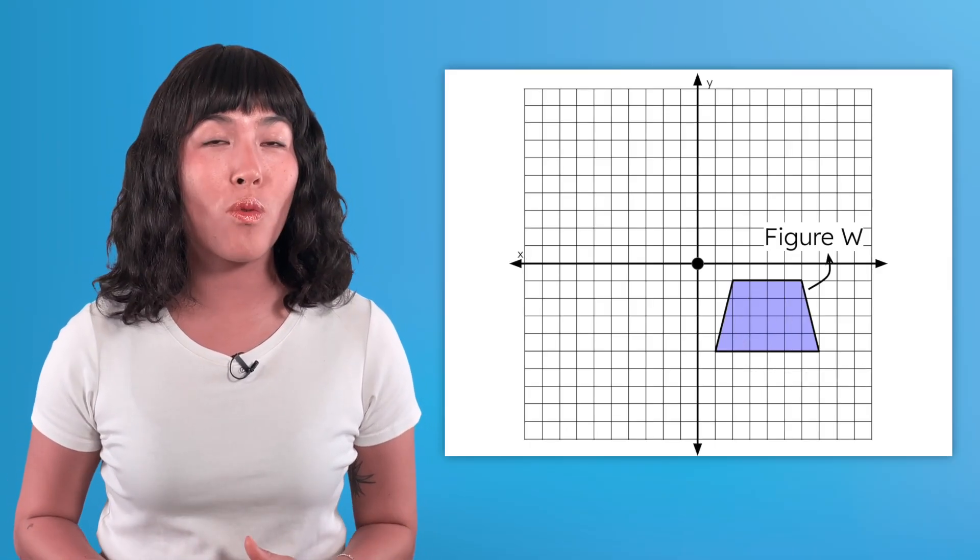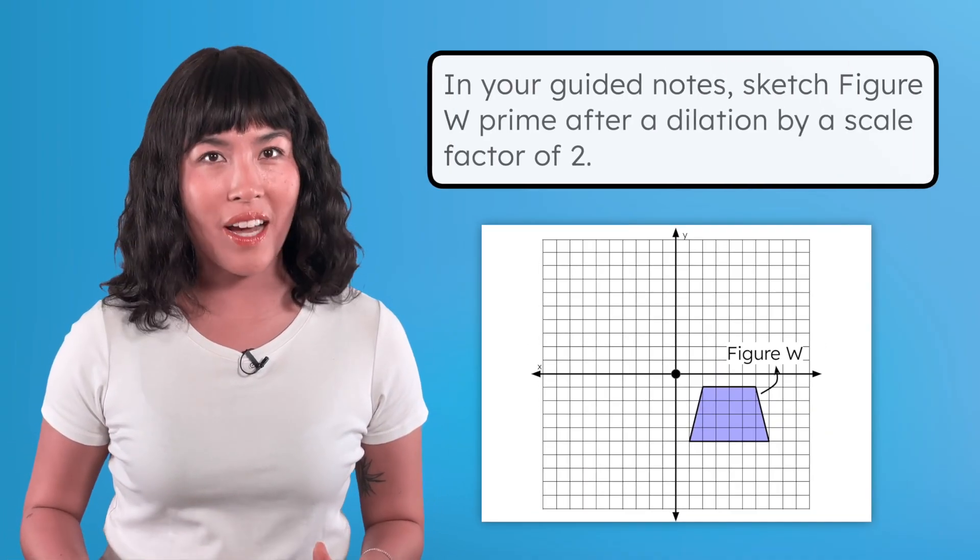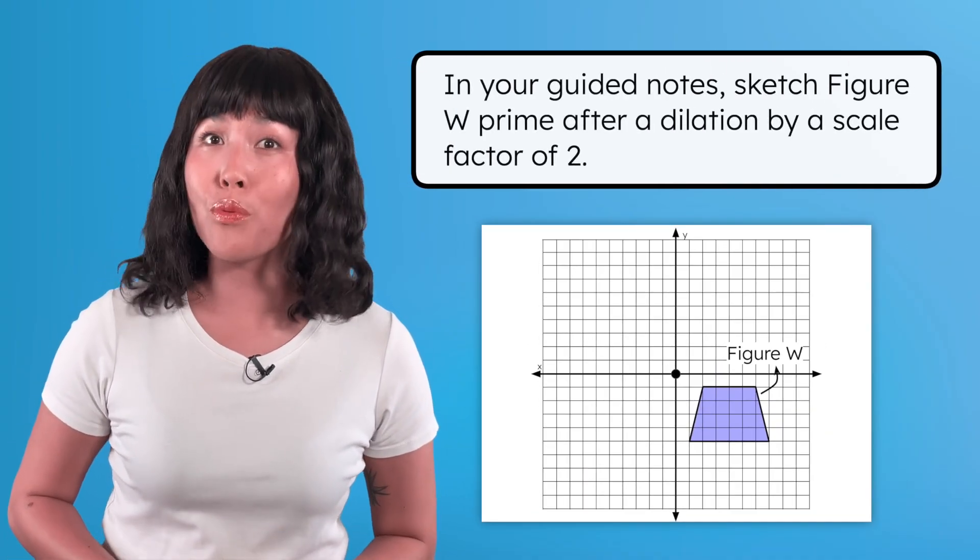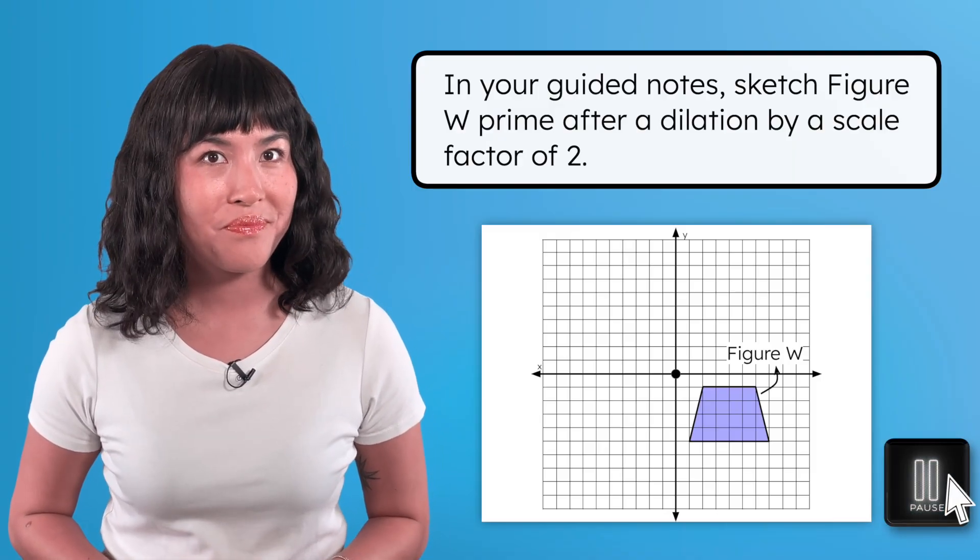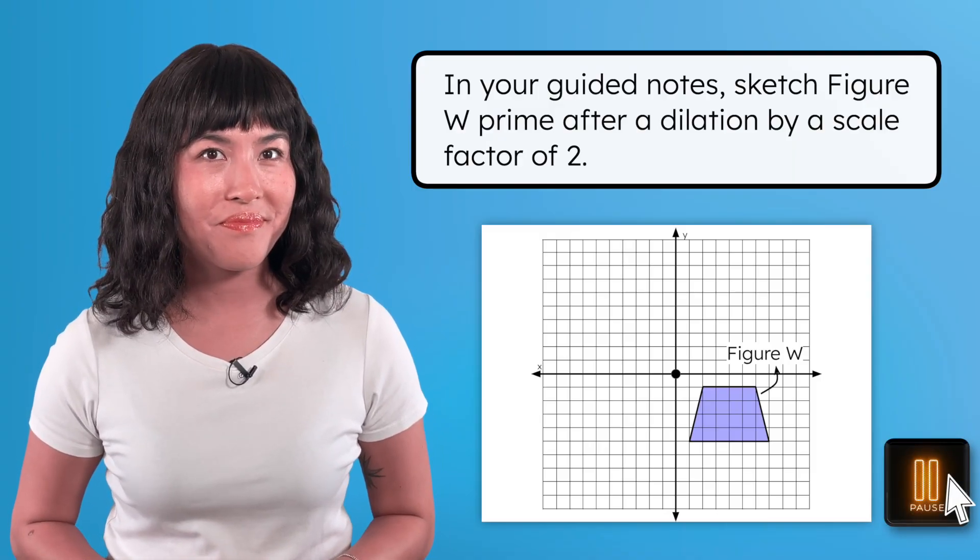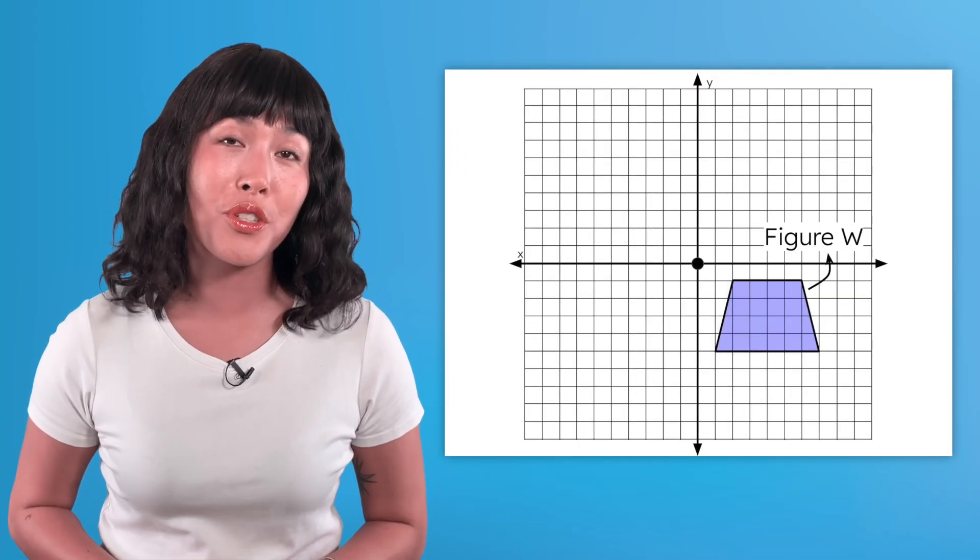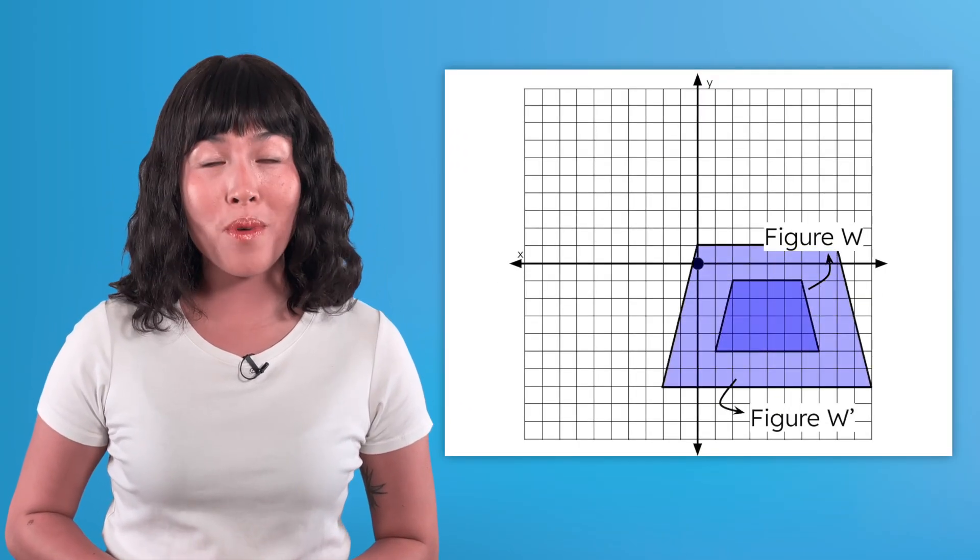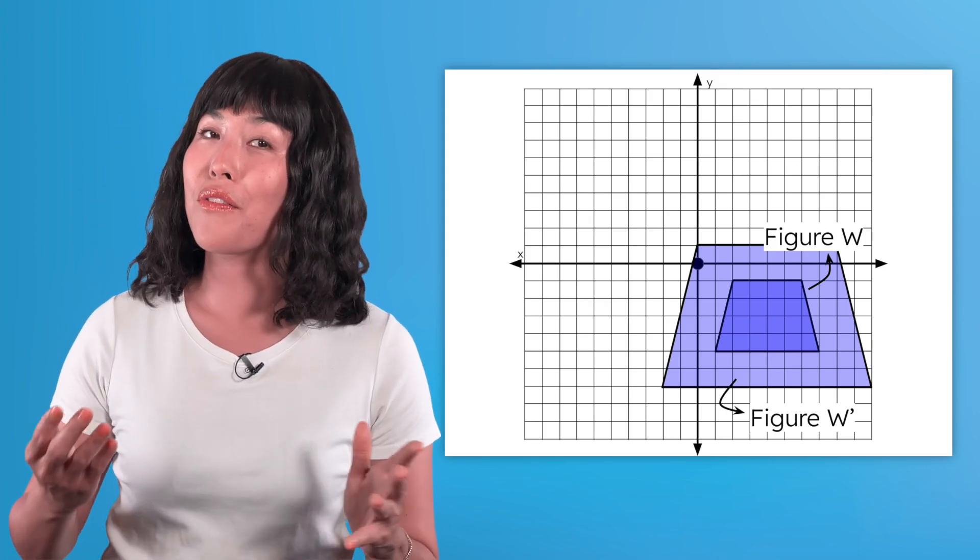Let's apply a dilation that will enlarge figure W instead. In your guided notes, sketch figure W prime after a dilation by a scale factor of two. Dilating figure W by a scale factor of two would create a figure W prime with dimensions that are exactly double the dimensions of the pre-image.